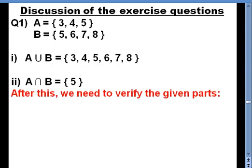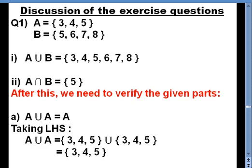There is also a verification part in this question. For verification questions, remember there will be a left side and a right side to compare. I recommend solving the individual sides first — left side and right side individually — then compare the results. The thing to verify is: A union A equals A. Taking LHS, A union A equals {3, 4, 5} union {3, 4, 5}. Since no repetition is allowed, A union A equals {3, 4, 5}.